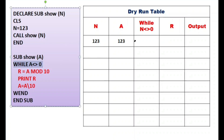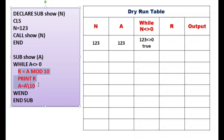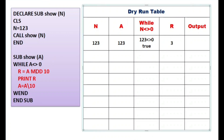Now the while loop: while a not equals to 0. Value of a is 123, and 123 not equals to 0 is true, so we go inside the loop. Inside the loop we have three lines of code. First: R = a MOD 10. Value of a is 123, and any number MOD 10 extracts the last digit of that number. The last digit of 123 is 3, so R = 3.